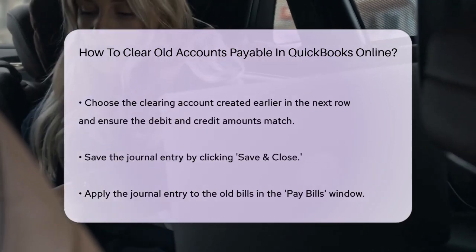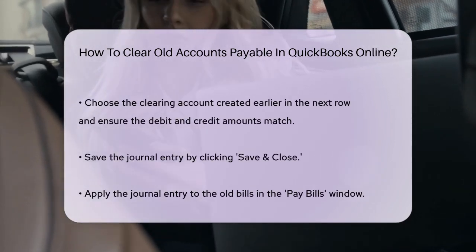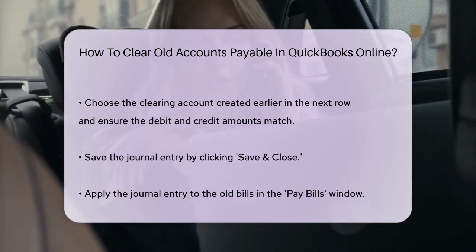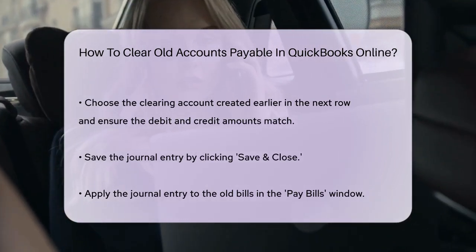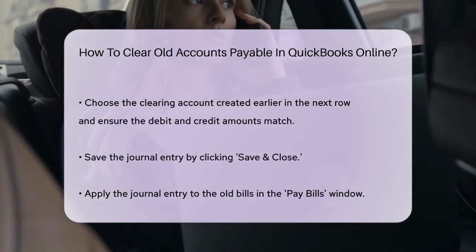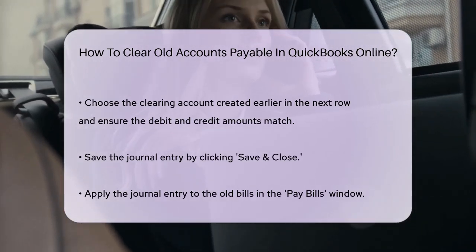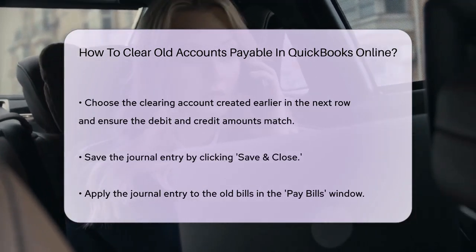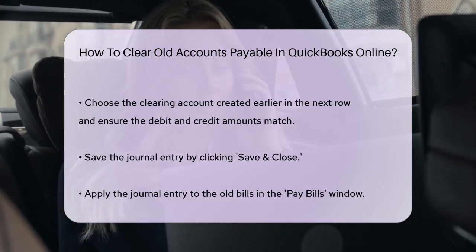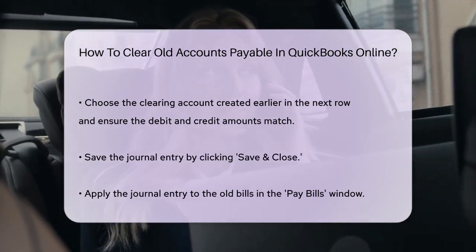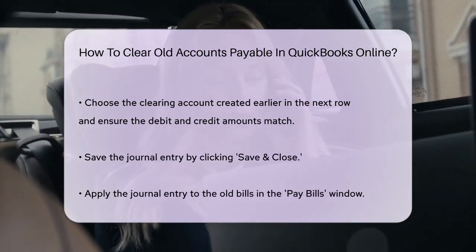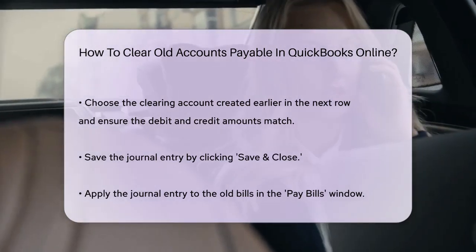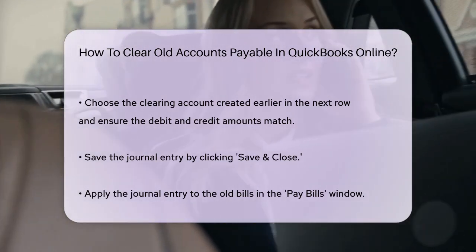Applying the Journal Entry. You need to apply this journal entry to the existing balance. Here's how: go back to the Pay Bills window, select the old bills you want to clear, and apply the journal entry you just created to these bills. This will offset the old AP balances and clear them from your records.